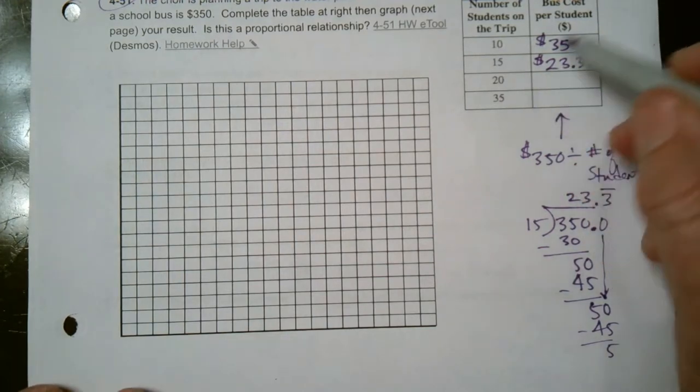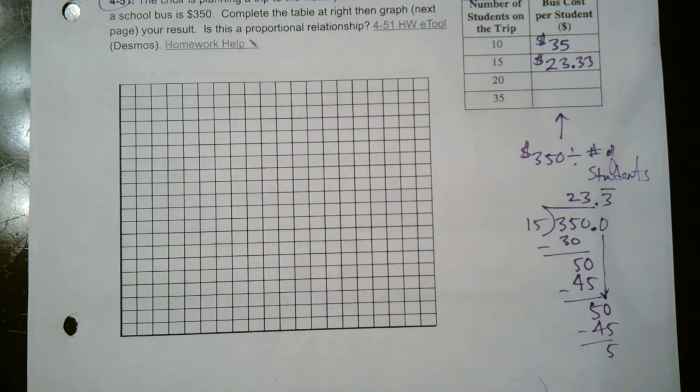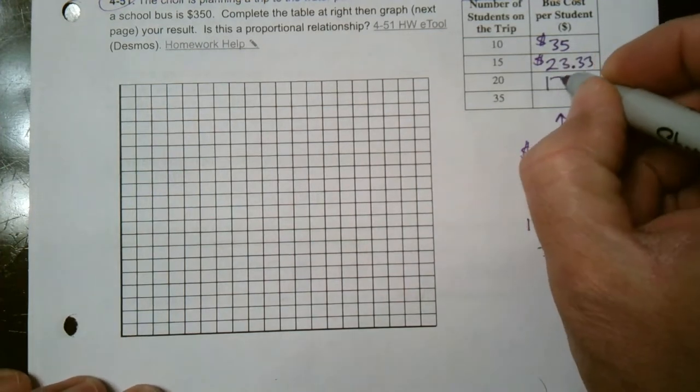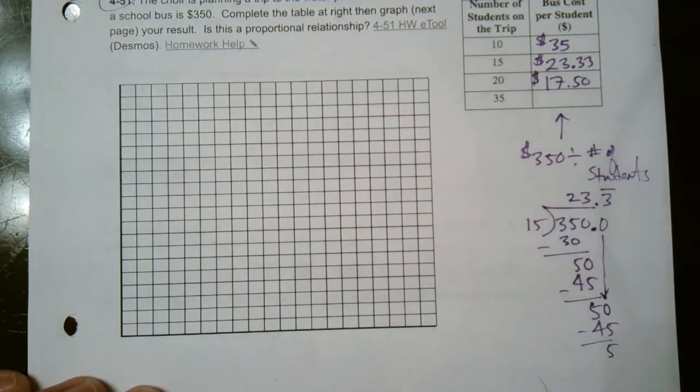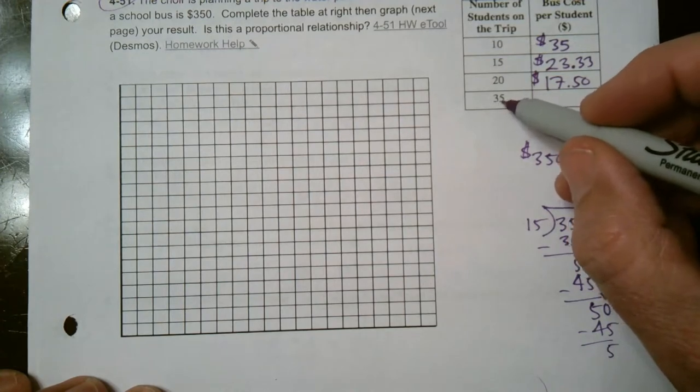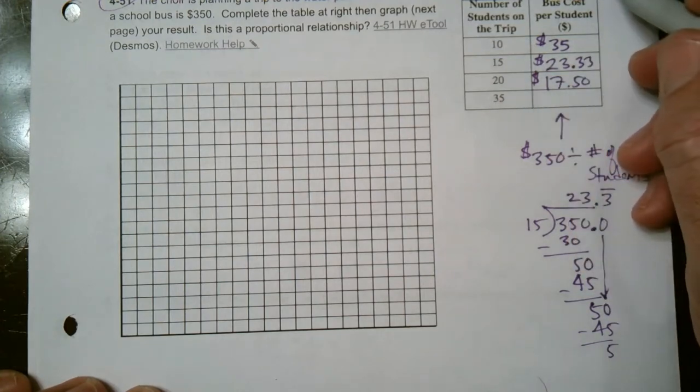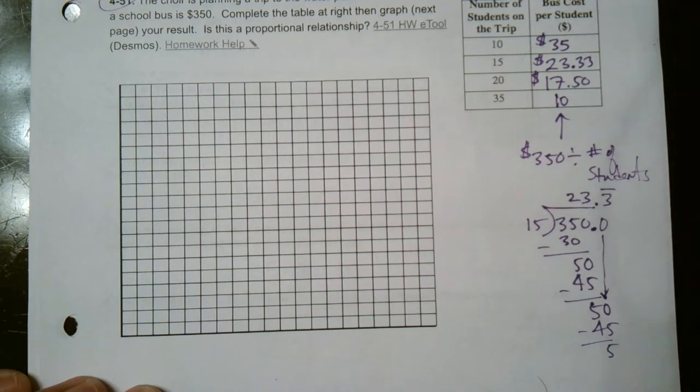All right. So what about 350 divided by 20? So again, you can either use the calculator, if you're allowed, or use long division. And you should end up with $17.50. So for 20 students, it's $17.50. So for 35 students, we can do that one now. So 35 into 350 would be 10. So it'd be $10 per student if it was 35 students.